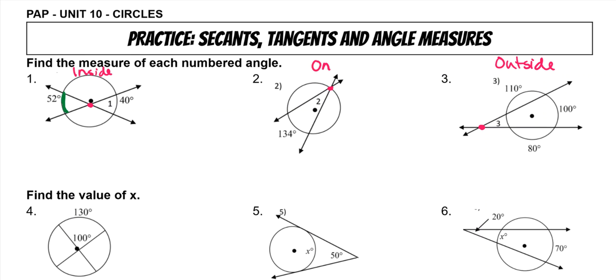For number one, you have this arc and this arc, and you're trying to solve for these angles which are vertical, so they'll both be the same. What you would do is add them together, 52 plus 40, and then divide by two, and that gives you the measure of angle one.